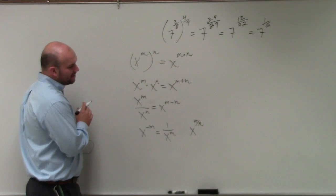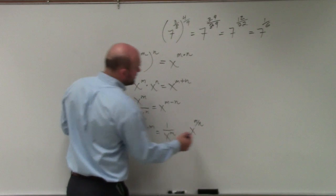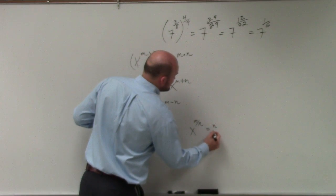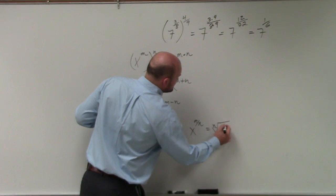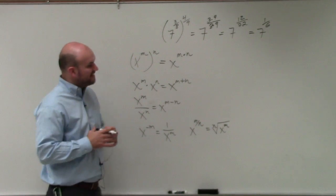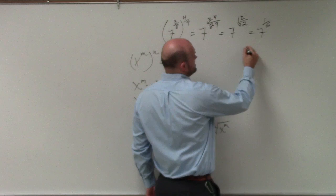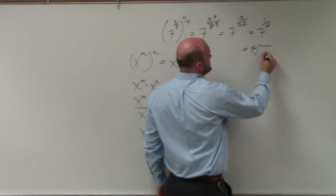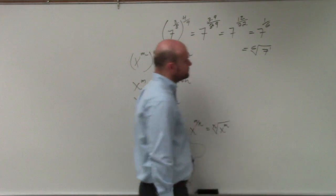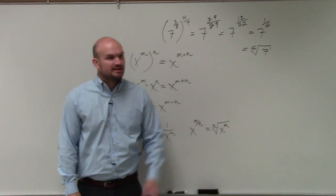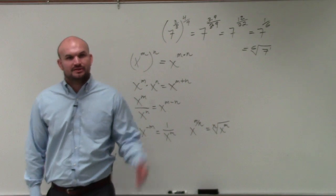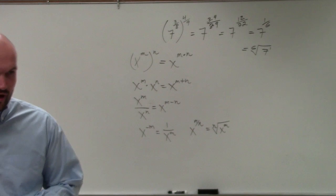But if you have an exponent with a rational power, that can be rewritten as the nth root of x to the m. So here, I can rewrite this as the sixth root of 7 to the first power. I didn't express I wanted it to be written as a radical, but that is something that you guys should be aware of.